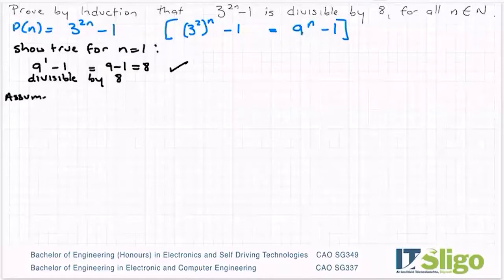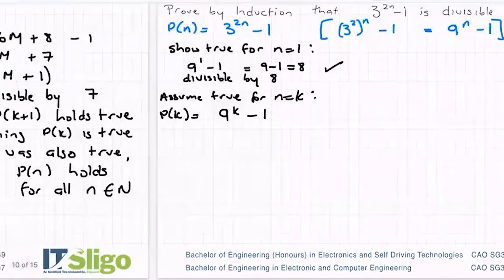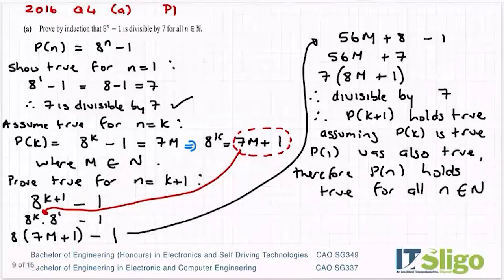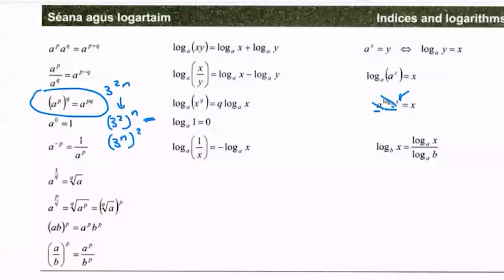All is good for n = 1. Then we assume true for n = k. So I'll end up with P(k) = 9^k - 1. If you remember the last one we did, we used this letter m to show that it was divisible by 8.